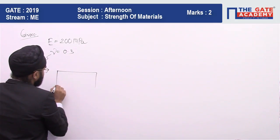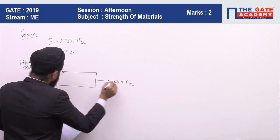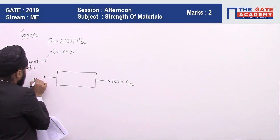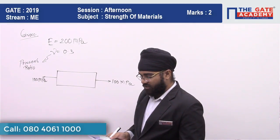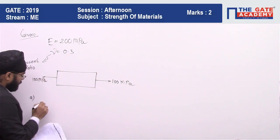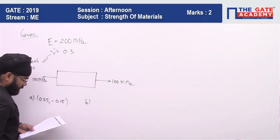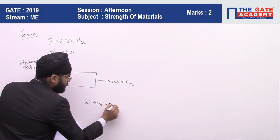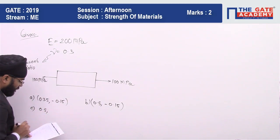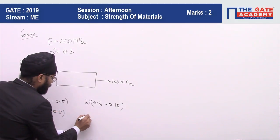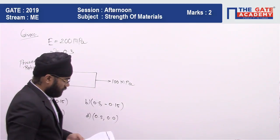So this is a thin sheet, and 100 megapascal is applied. The question asks for the principal strains in the plane of the sheet. There are four options: Option A is 0.35 and minus 0.15; Option B is 0.5 and minus 0.15; Option C is 0.5 and 0.0.